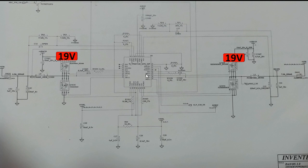Once the IC delivers the control signals — drive high for one MOSFET and drive low for the other — the same applies to the second channel: drive high to one MOSFET and drive low to the other. Once these two MOSFETs receive the control signal, the 19 volt passes to the next stage, where we will get 3 volt on one channel and 5 volt on the other.